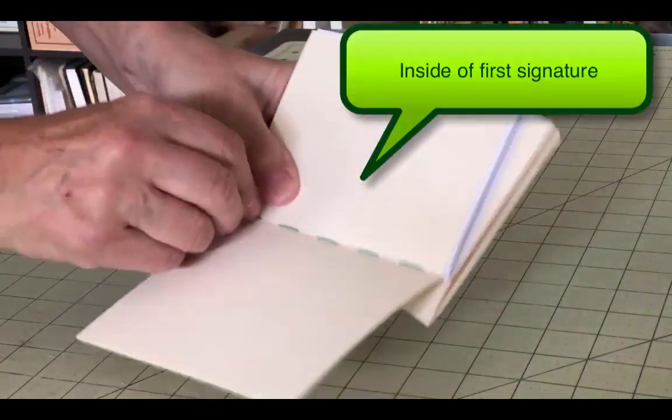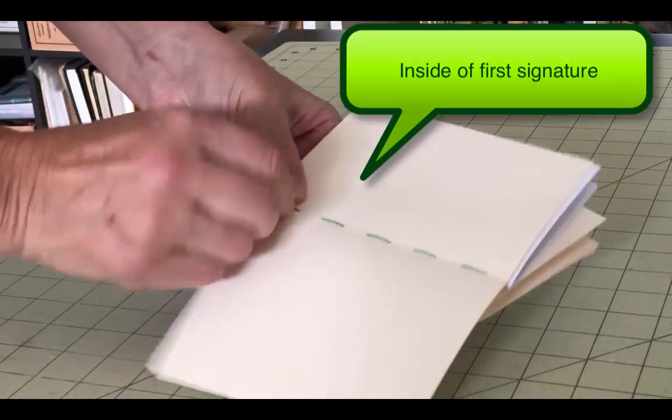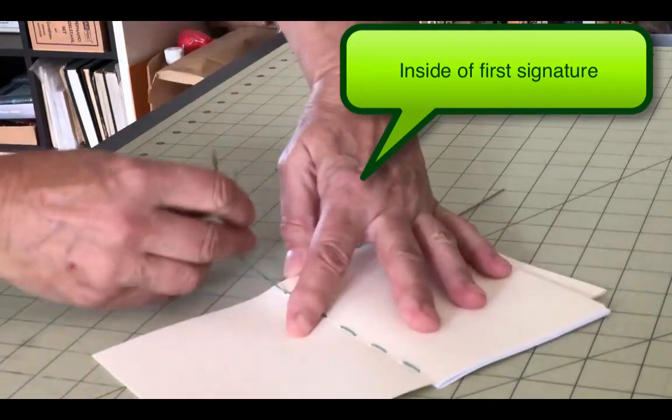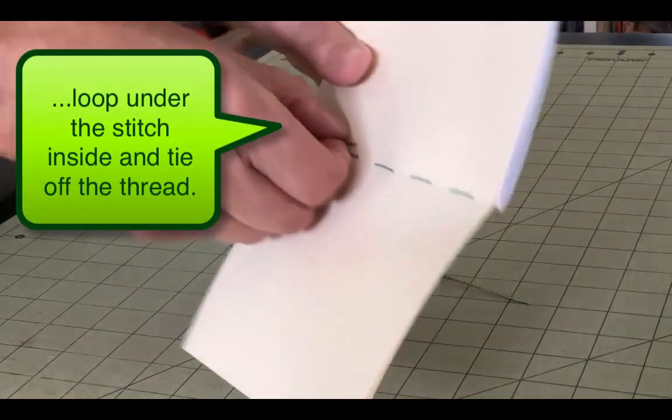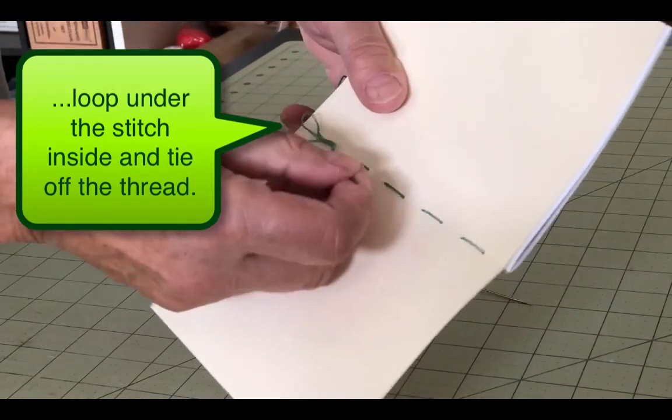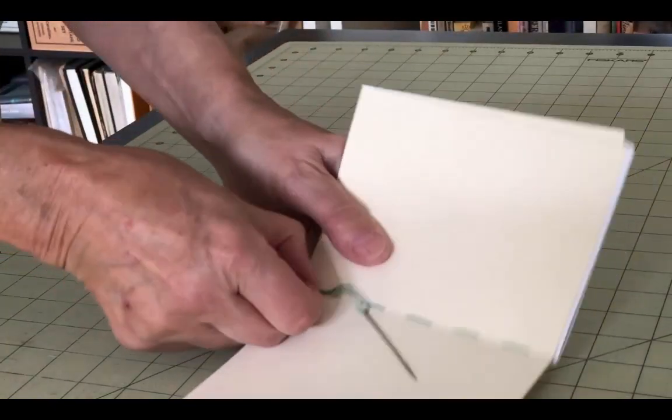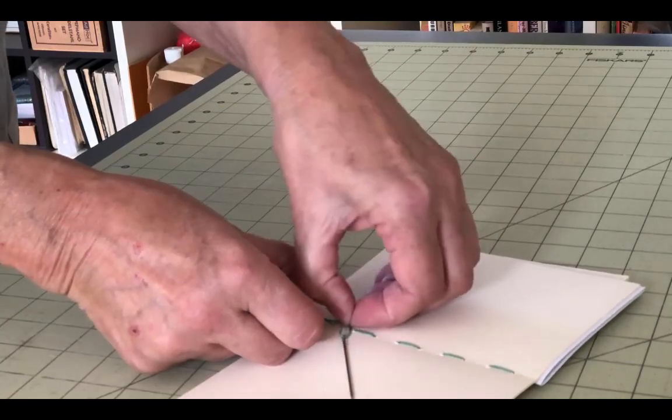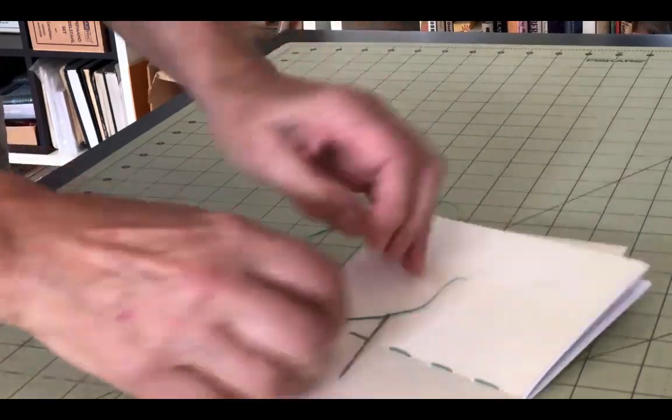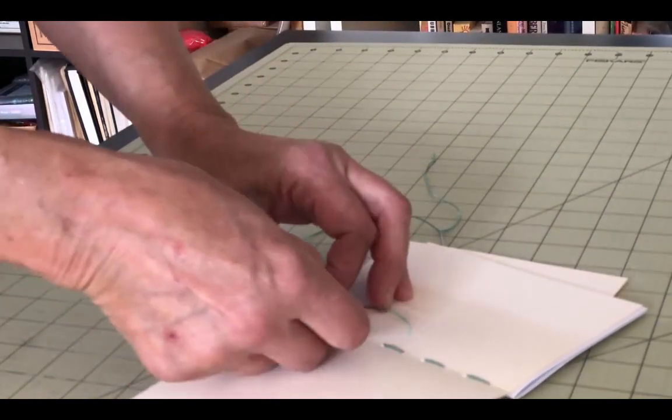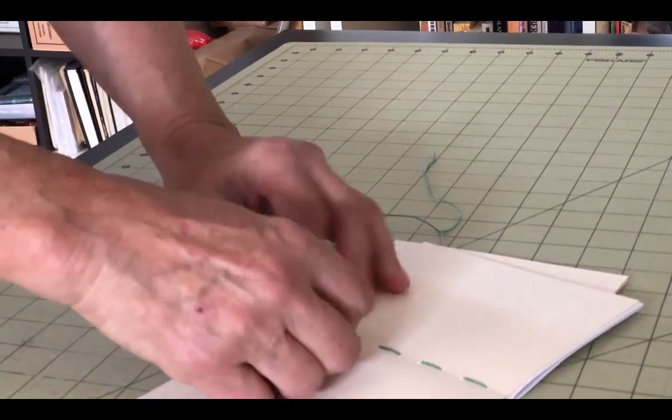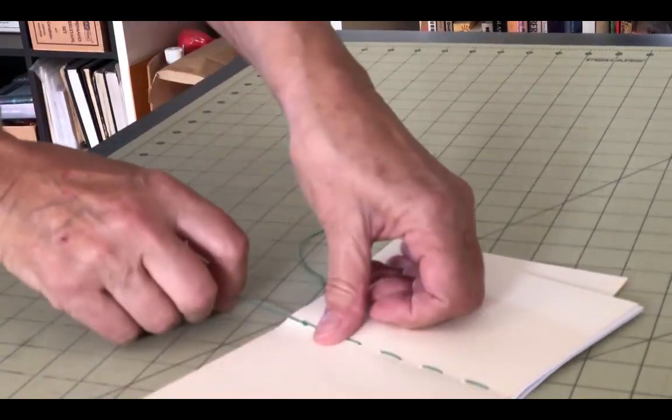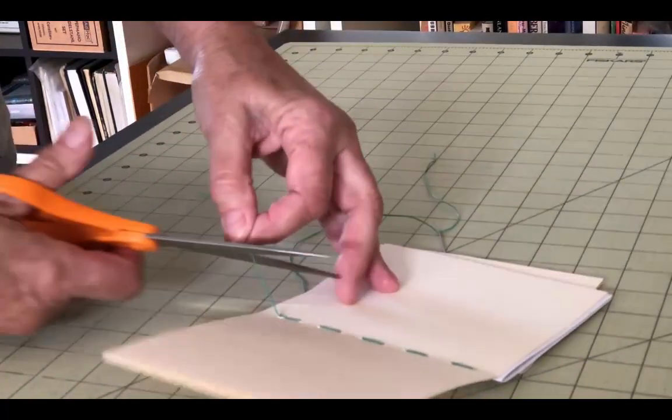Once inside the signature, loop under that stitch and tie off the thread with a simple knot. You can see now why you want to leave a long tail here when you first start sewing. If it's much shorter than this, it would be pretty hard to manage. Trim the thread.